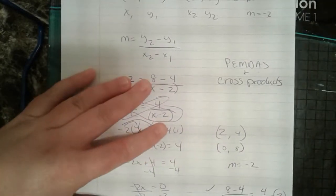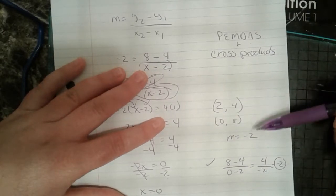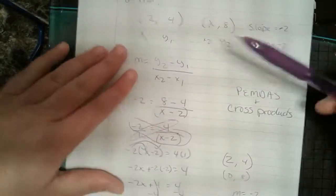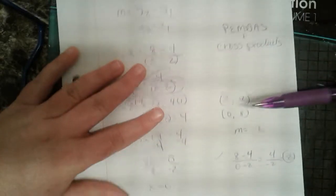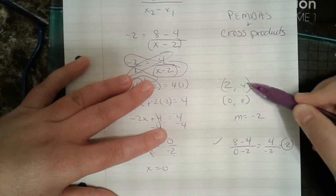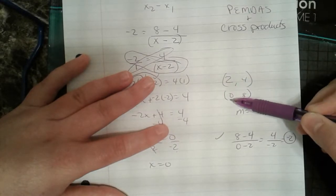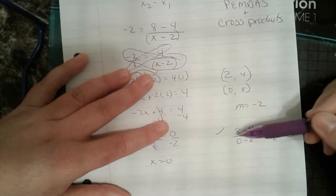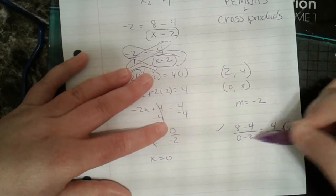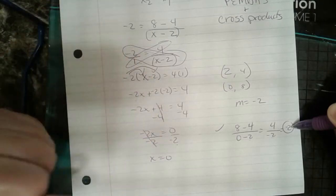So let's check it out. So I can say, hey, now my order pairs are (2, 4) and (0, 8). My slope is negative 2. Is this really the case? Well, using our formula, we could check this out and say, hey, 8 minus 4 because y2 minus y1 over x2 minus x1. So 0 minus 2. So 8 minus 4 is 4. 0 minus 2 is negative 2. And 4 divided by negative 2 is negative 2. So indeed, did check this out.